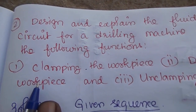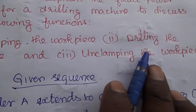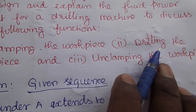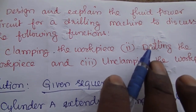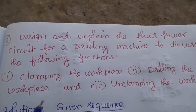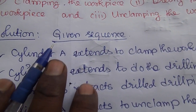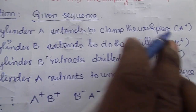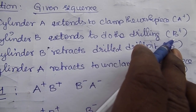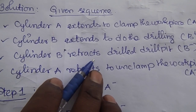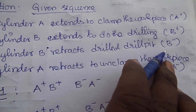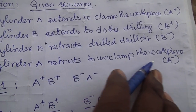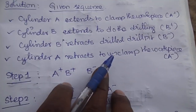The functions are: clamping the workpiece and unclamping the workpiece. The sequence is: Cylinder A extension to clamp the workpiece — A plus. Cylinder B to do the drilling — B plus. Retract the drill bit — B minus. Retract the clamp to unclamp the workpiece — A minus.